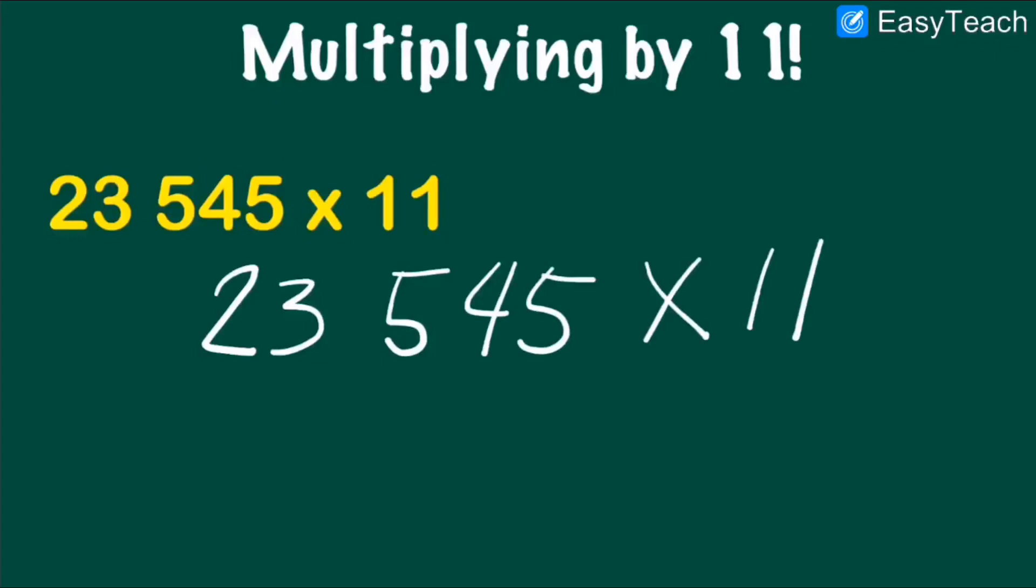So the first step is to copy the first digit of a number. The first digit is 2. The next step is to add the neighboring numbers.